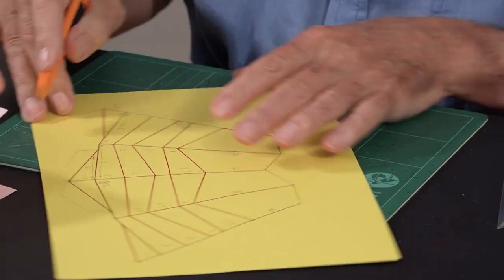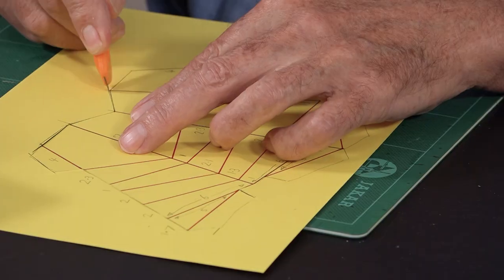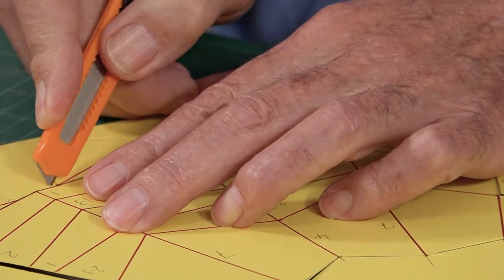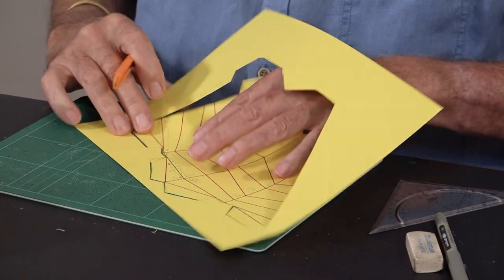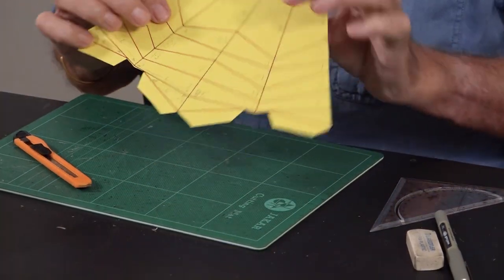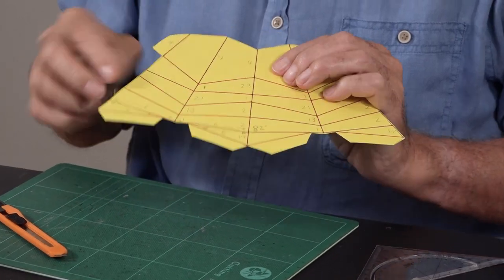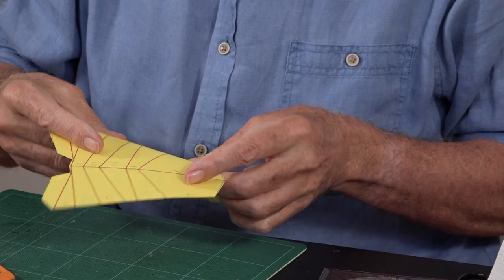Scored it all. Now I'll just cut it out really quickly. It's quite interesting. There's only one tab that sticks the whole thing together and then there's four that stick it onto the page. So I'll just fold those up.